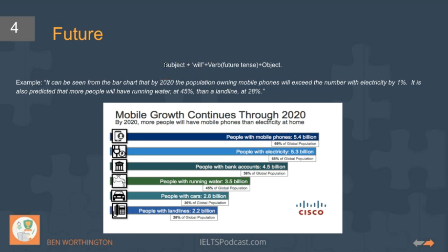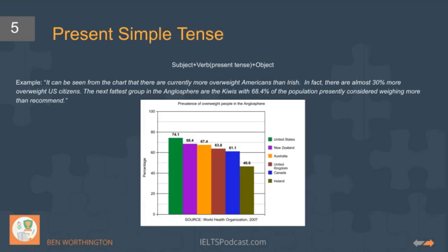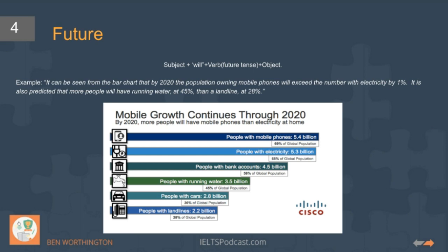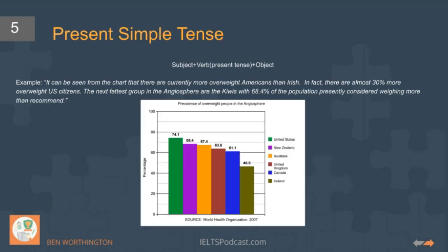Use 'will' and try to avoid 'going to.' 'Going to' is a tense that's more common in spoken English, so 'will' is the standard tense there. Also, if you can mix it with future verbs — 'it is predicted,' 'it is forecasted,' 'it is expected' — that's ideal. Smart students would have written those examples down.